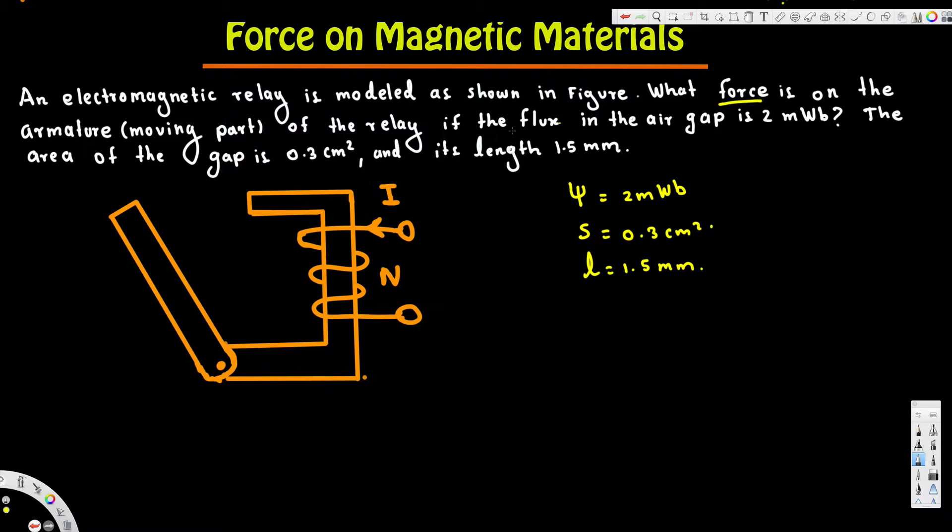To find the force, we can use this formula: F equals B squared S over 2 mu naught. But if we want to write this in terms of flux, we can write it as psi squared divided by 2 mu naught S.